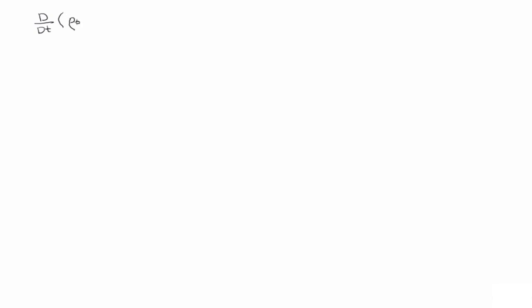We know that rho_0 is just a function of big X, and the same for phi_0. That must equal the material time derivative of the other side, which is rho phi J. Because the initial reference density and the initial reference porosity aren't functions of time — by definition they're the reference values — the left hand side is identically zero.